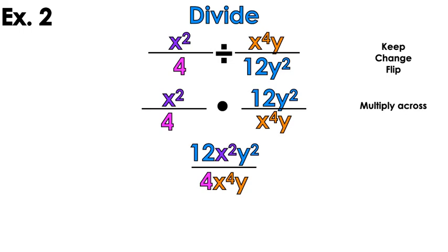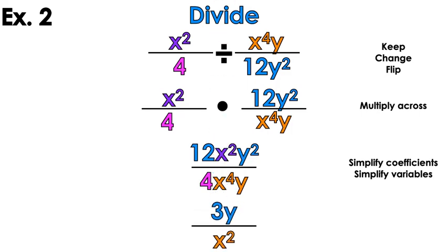So I'm going to get 12x squared y squared on top and 4x to the fourth y on the bottom. Now what do we do? Simplify. Simplify the coefficients, simplify the variables. 12 over 4 — don't say one-third, it's three over one, which is three. For the x's: two x's on top and four x's on the bottom — two are left over on the bottom. Then y squared and y: that leaves y on the top.